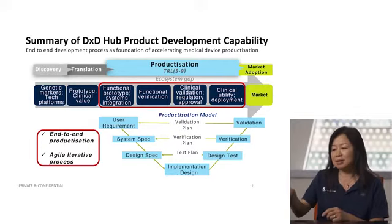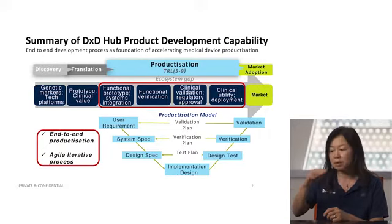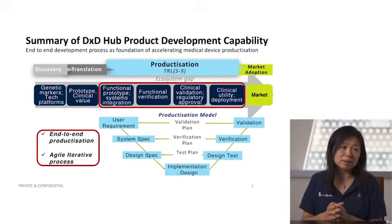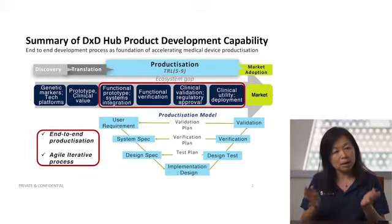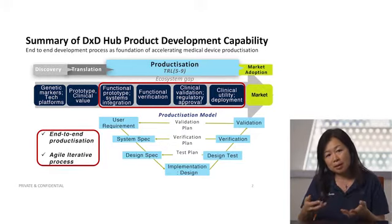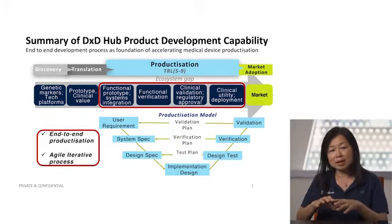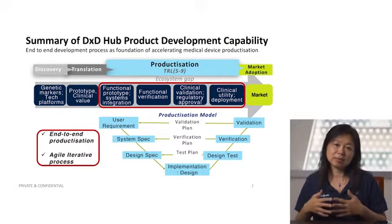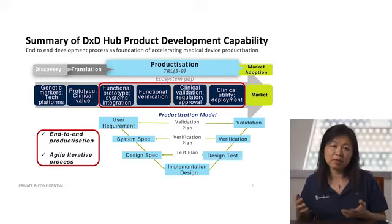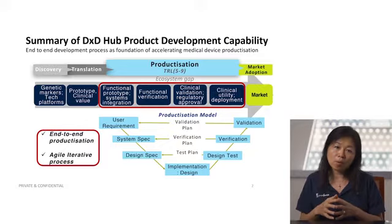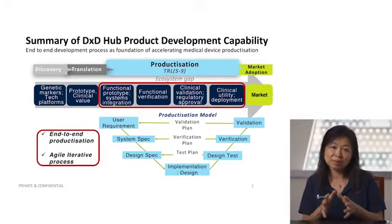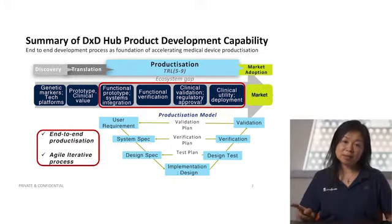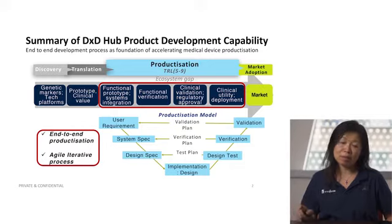What goes on in between is this V-shape at the bottom of productization and market adoption. We always start from the user requirement — what does the product look like when we take it to market, and how is it going to be used? We're not talking about a snapshot of a test; that's why we call it the anatomy of a diagnostics test, because it involves the whole workflow. We focus on end-to-end productization and the agile process.